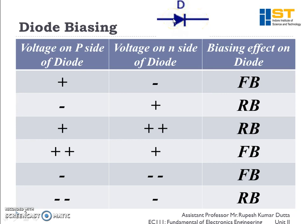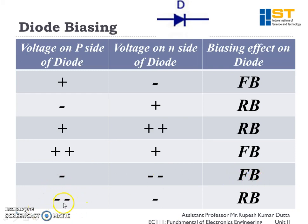Always remember: if the P side is less positive than the N side, that is reverse bias. If the P side is more positive than the N side, that is forward bias. When both terminals are negative, if the P side is less negative than the N side, that is forward bias. If the P side is more negative than the N side, that is reverse bias.